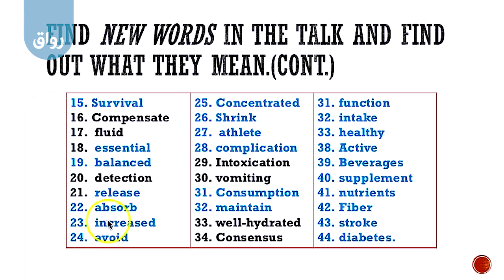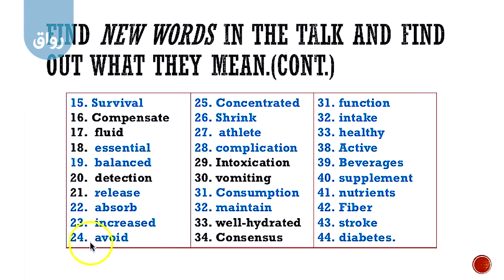Then we have 'increase' — اللي هي زيادة، هذي أيضاً من الكلمات المهمة. The opposite of 'increase' is 'decrease' — DE-decrease. Then the next word is 'avoid' — اللي هو تجنب. Then 'concentrated' — يتركز. Then 'shrink' — يتقلص. Then 'athlete' — اللي هو الشخص الرياضي.